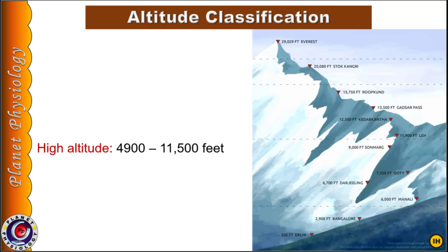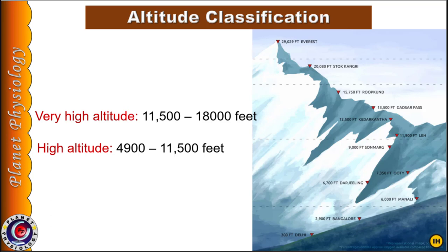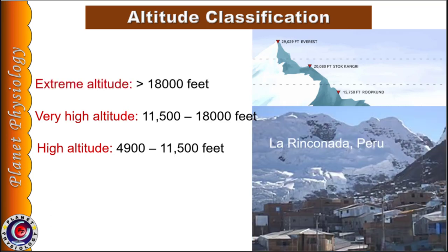From 11,500 feet to 18,000 feet is considered as very high altitude, and oxygen saturation begins to fall rapidly in this range with severe high altitude sickness observed. Above 18,000 feet is considered as extreme altitude, associated with marked hypoxia, hypocapnia and alkalosis. Hence, no human habitation occurs here.